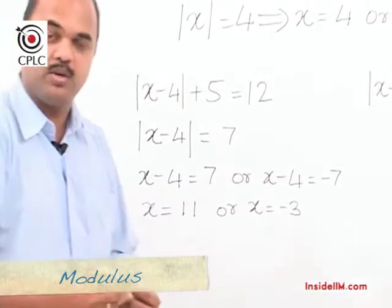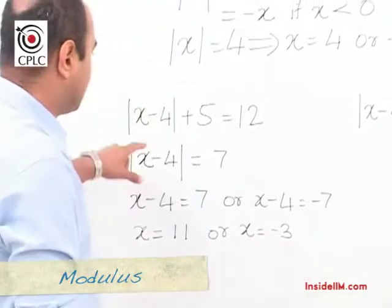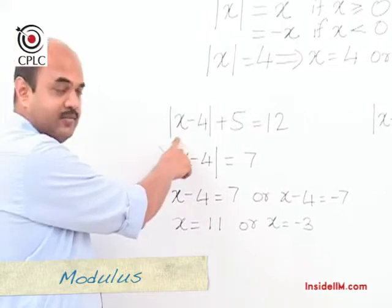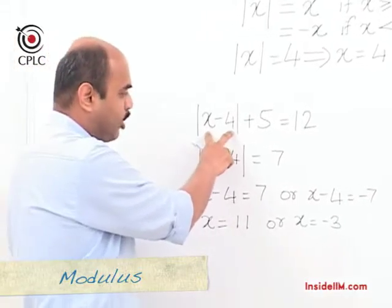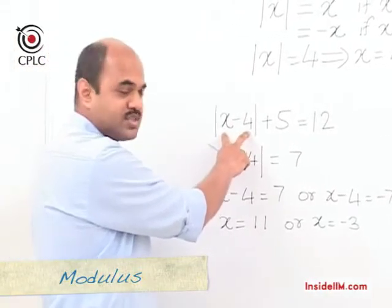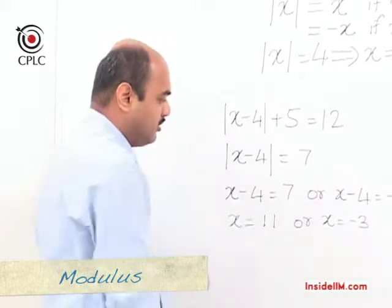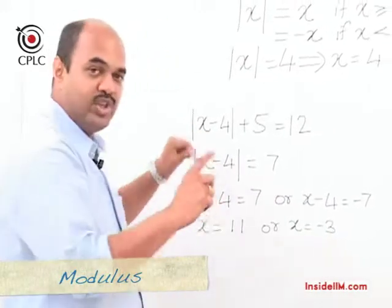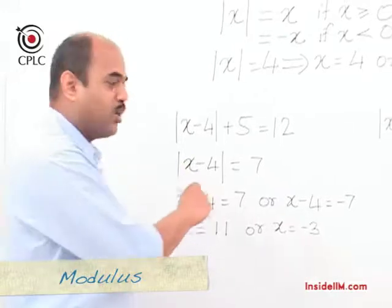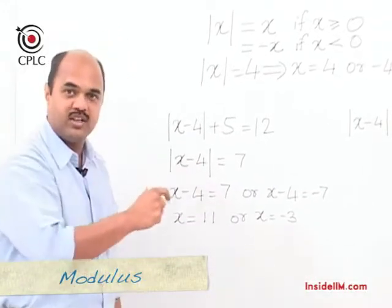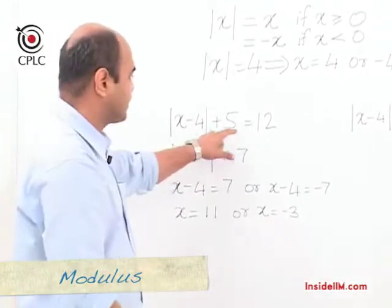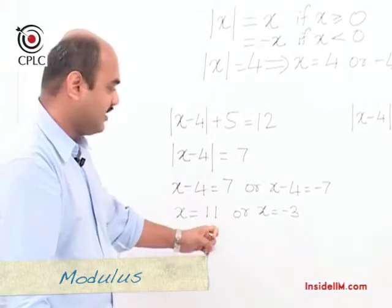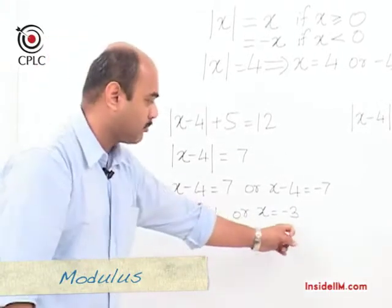So there are two possible values of x satisfying this equation. If x equals 11, the mod reduces to 7, and 7 plus 5 is 12. Or x can be minus 3 — if you put minus 3, within the mod sign you have minus 7, and taking the modulus gives 7, and 7 plus 5 equals 12. So there are two solutions: x can be either 11 or minus 3.